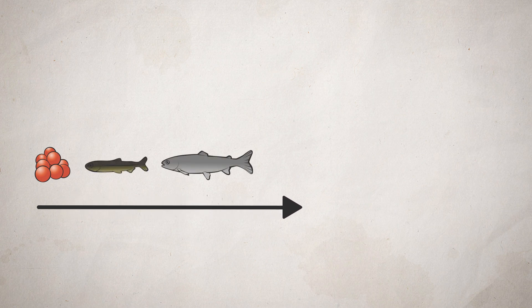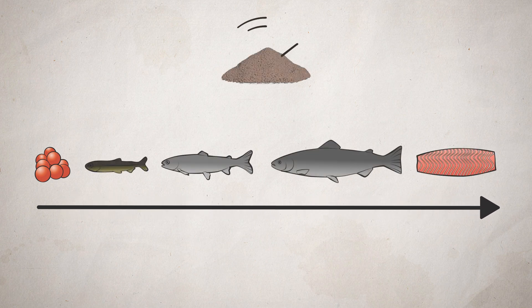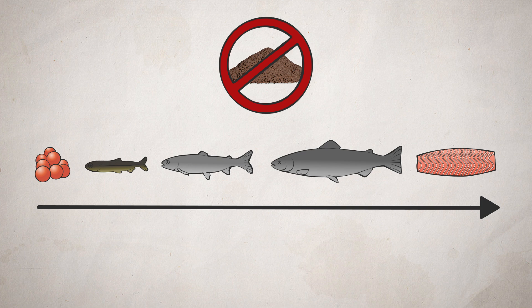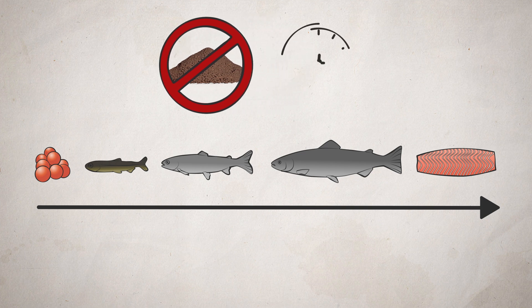In some stages of the production cycle, it is necessary to starve the fish, and you are then exempted from the obligation to feed while this is going on. The starvation period should still be as short as possible.